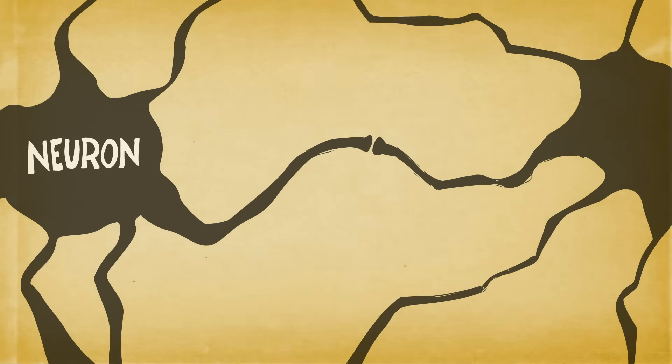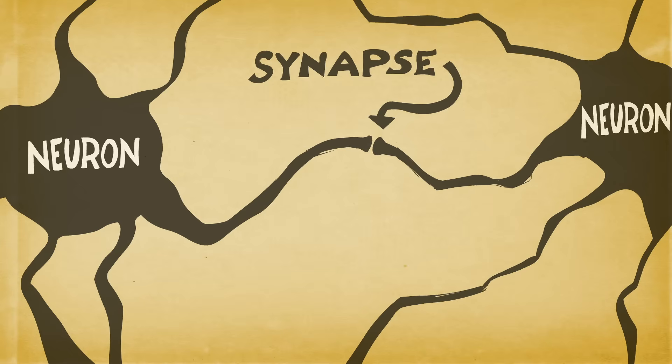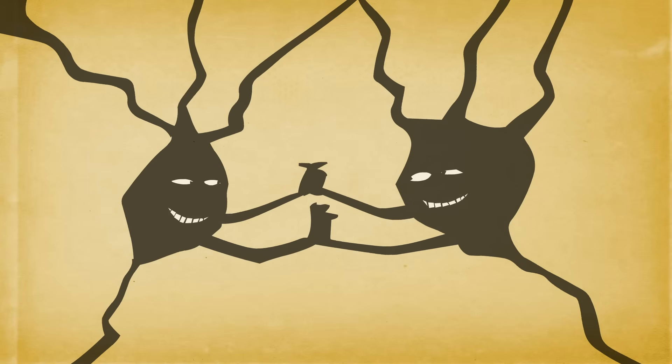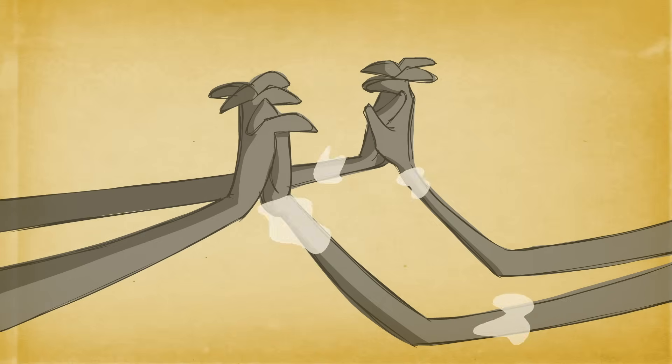Neurons throughout the brain communicate at dedicated sites called synapses using specialized neurotransmitters. If two neurons communicate repeatedly, a remarkable thing happens. The efficiency of communication between them increases.